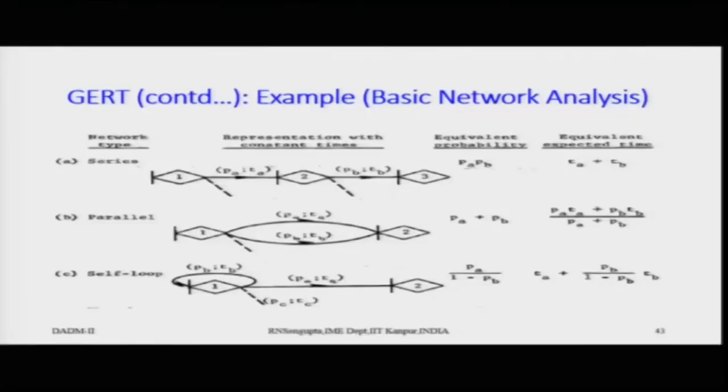In the second example, we considered that if any one of them is successful, we consider this as a success. So for yes-yes, yes-no, and no-yes it was a success, while for no-no it was a failure. Now when we have a series network, how would you find out the probability? We also have the parallel network, and the looping concept is a part and parcel of the GERT, QGERT processes.